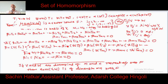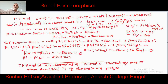Summarizing today: we have discussed the set of homomorphisms and proved that the set of homomorphisms is a vector space over the same field F, and we have found how many elements are in the basis of the set of homomorphisms. Thank you for watching.